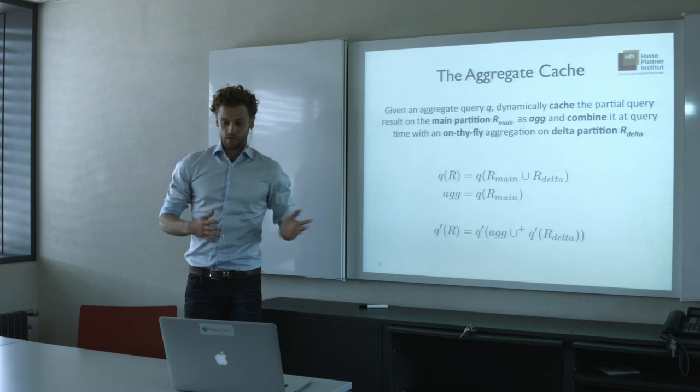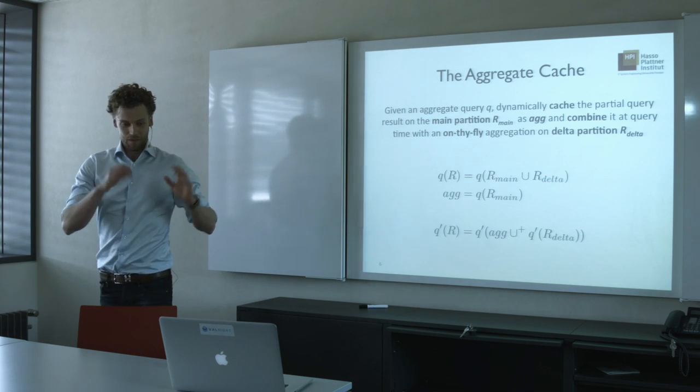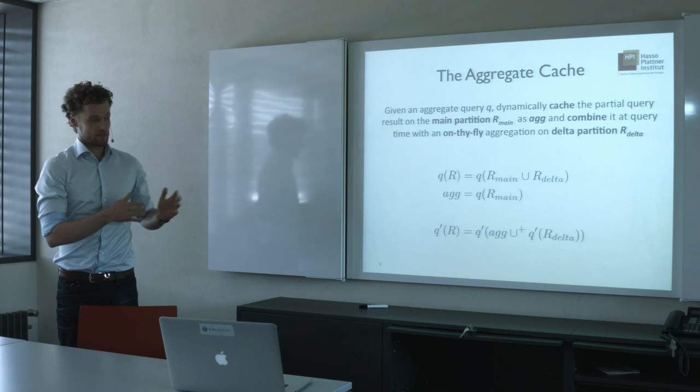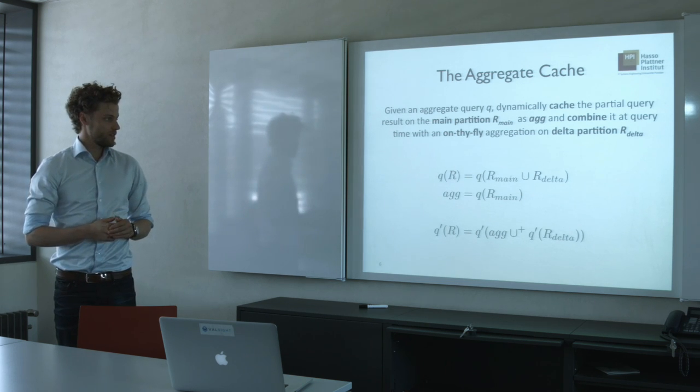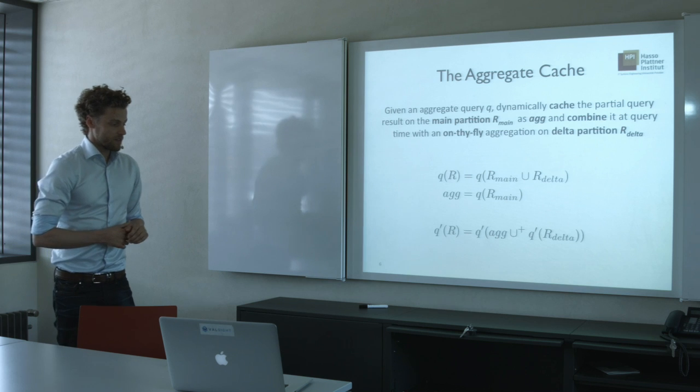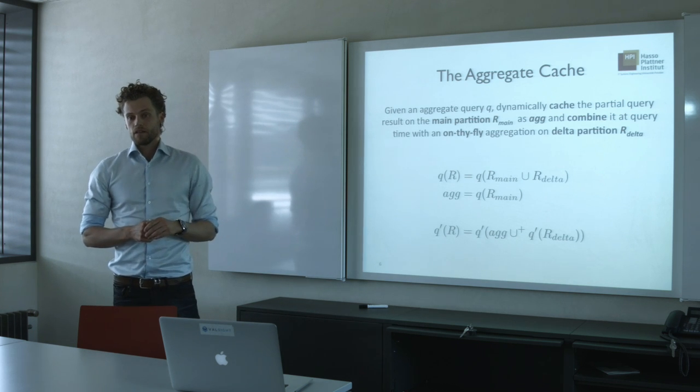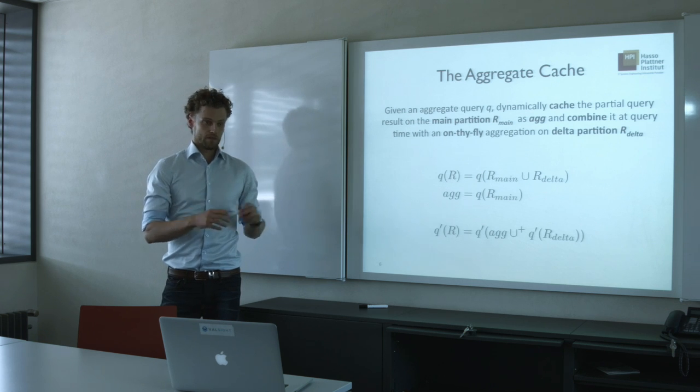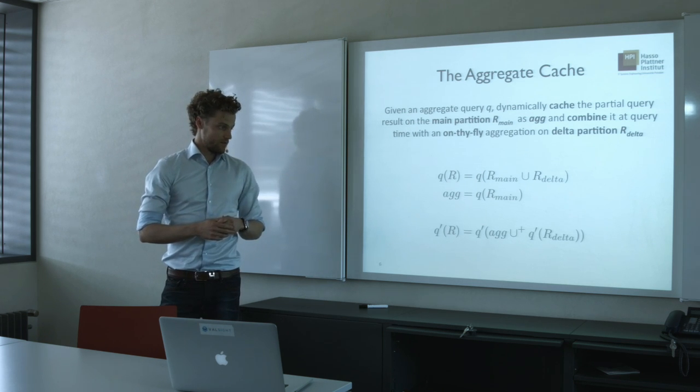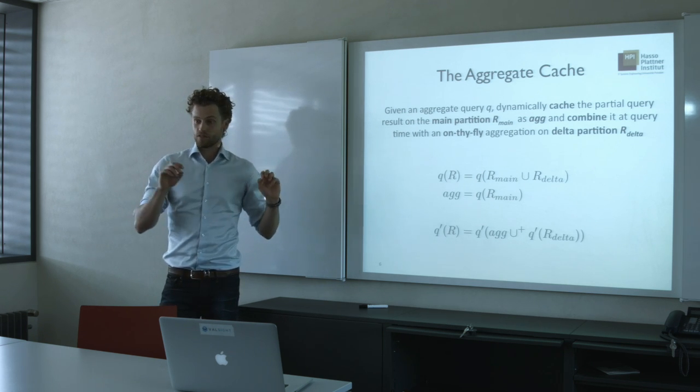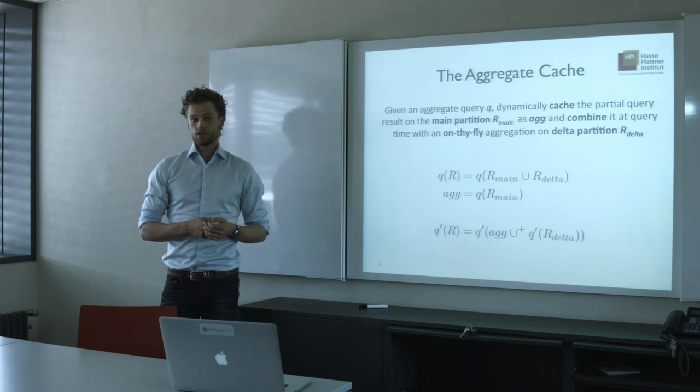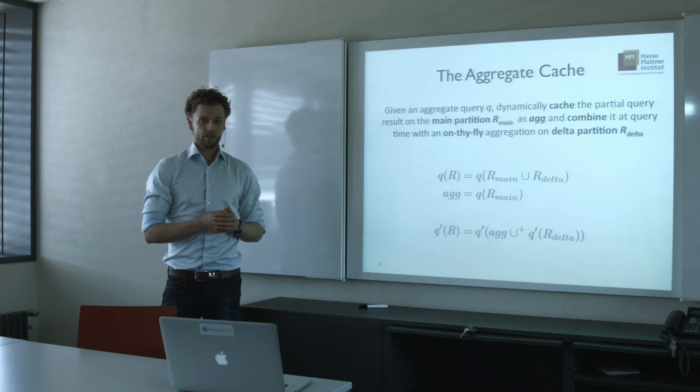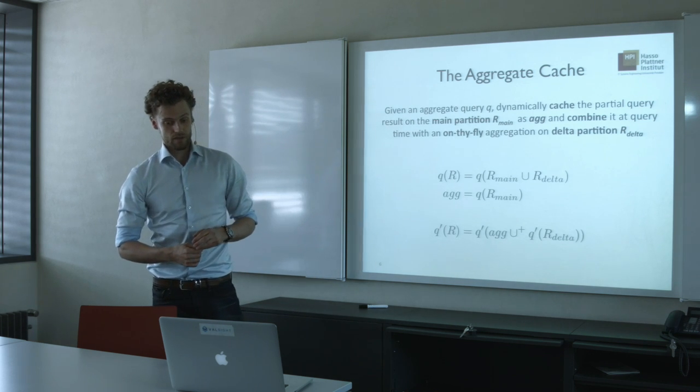And now the main idea, the abstract of this aggregate cache that I've been designing and implementing during my thesis is that for every aggregate query, you only cache the part that affects the main partition or that's computed on the main partition. And the aggregation on the delta partition you always compute on the fly, and then you combine those two query results in delivering the final query result back to the user.